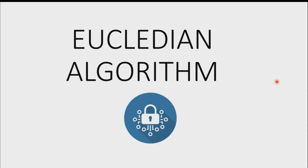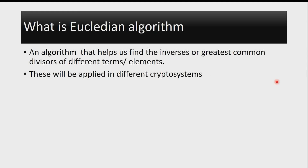Hello everyone and welcome to Cryptography Home. In this video, we'll be looking at the Euclidean algorithm. The Euclidean algorithm is simply an algorithm that helps us to find the inverse or the greatest common divisors of different terms or elements. We'll be applying this in the next videos in different cryptosystems. This concept is very important in cryptography, but those not interested in cryptography can still watch because I'll explain the general concept of the Euclidean algorithm.